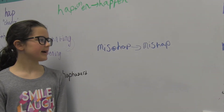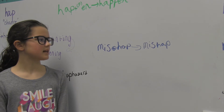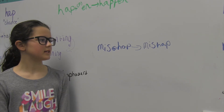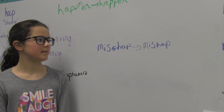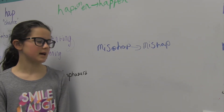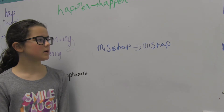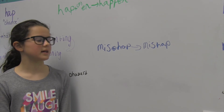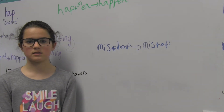Mishap. M-I-S plus H-A-P is rewritten as M-I-S-H-A-P, mishap. We don't double the P because there's no suffix.